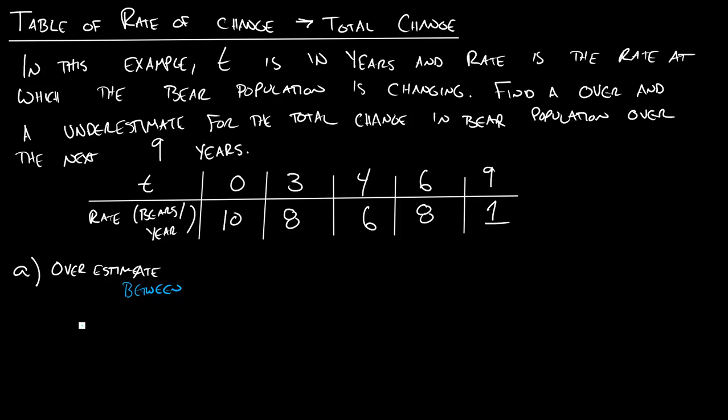So basically, we'll say between t equals 0 and t equals 3, what happens? Well, my population is increasing by 10 bears per year, and so I'll say total change. Or by 10 bears per year, and I'm doing that for 3 years, so my population increased by 30 bears.